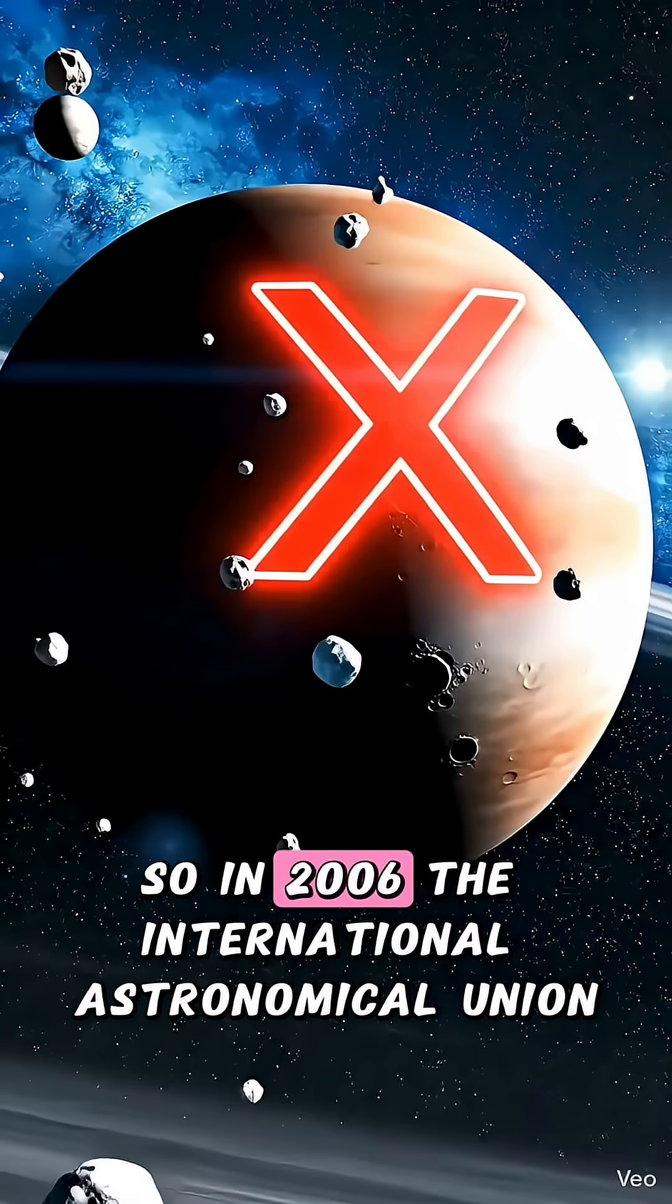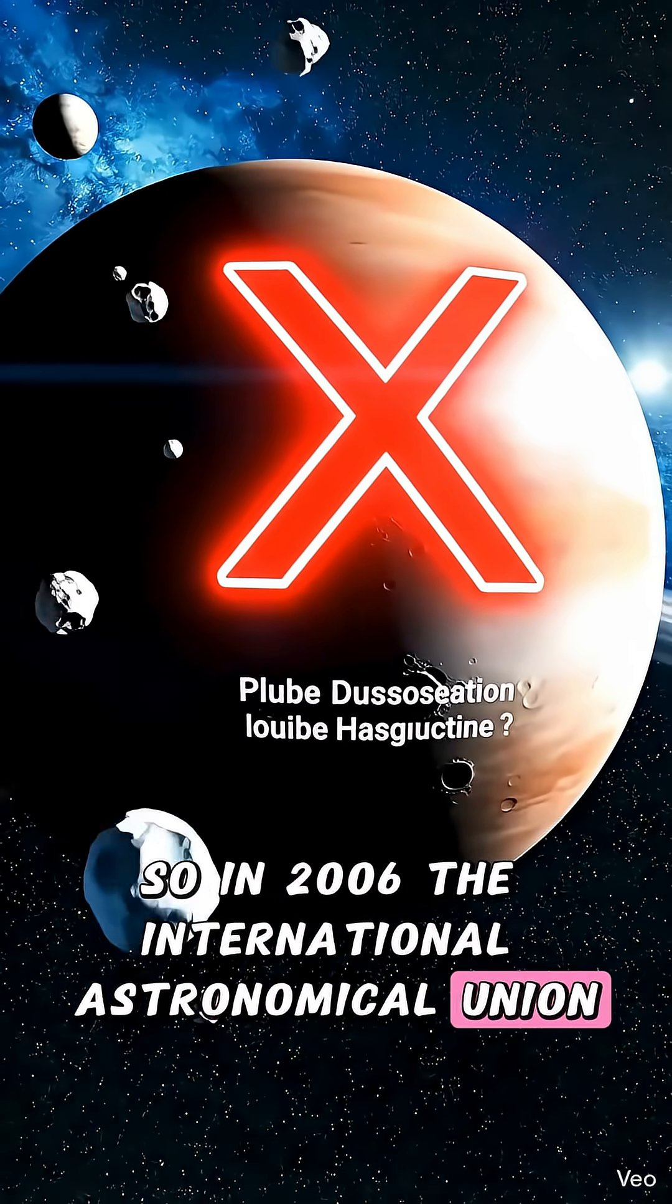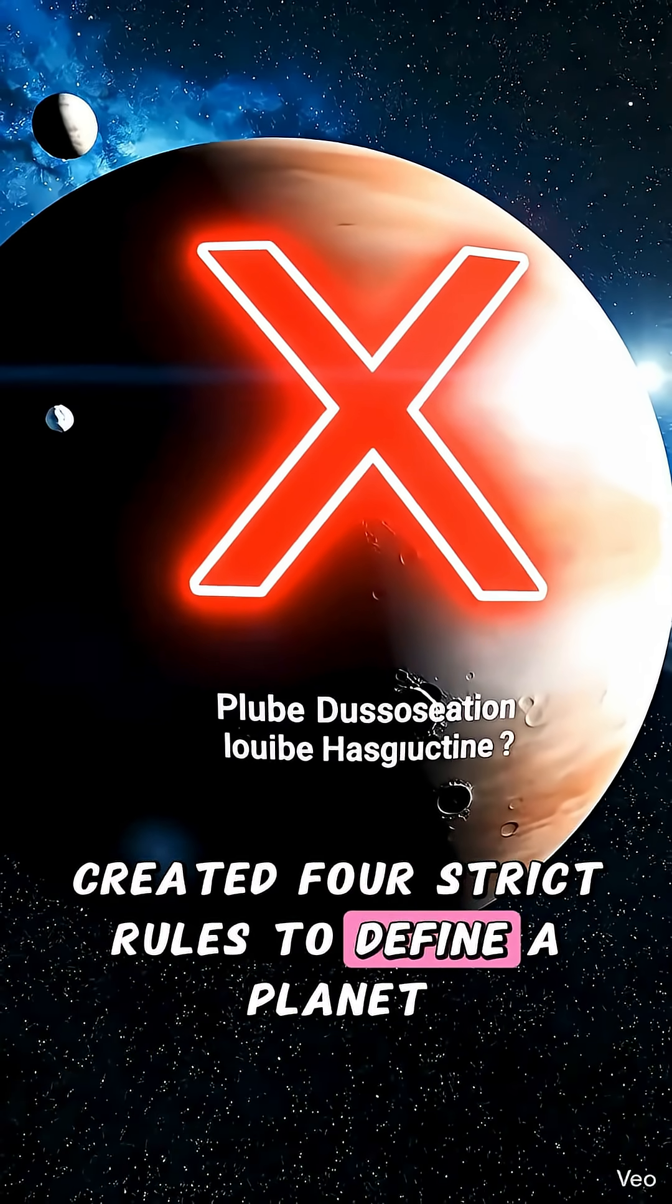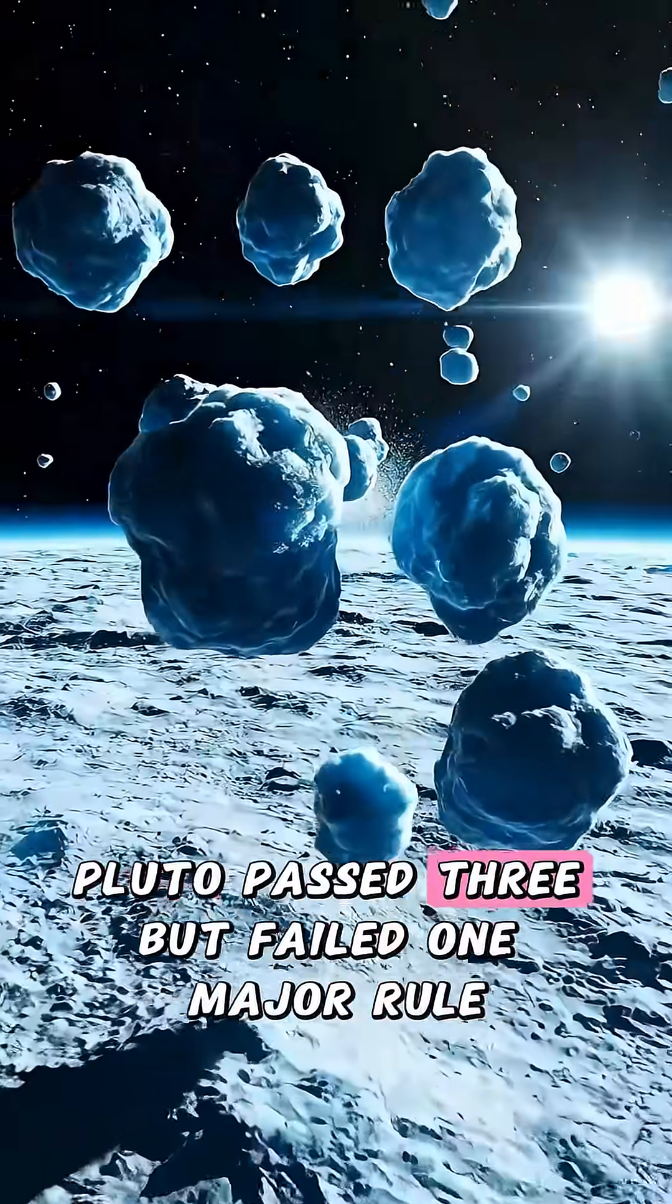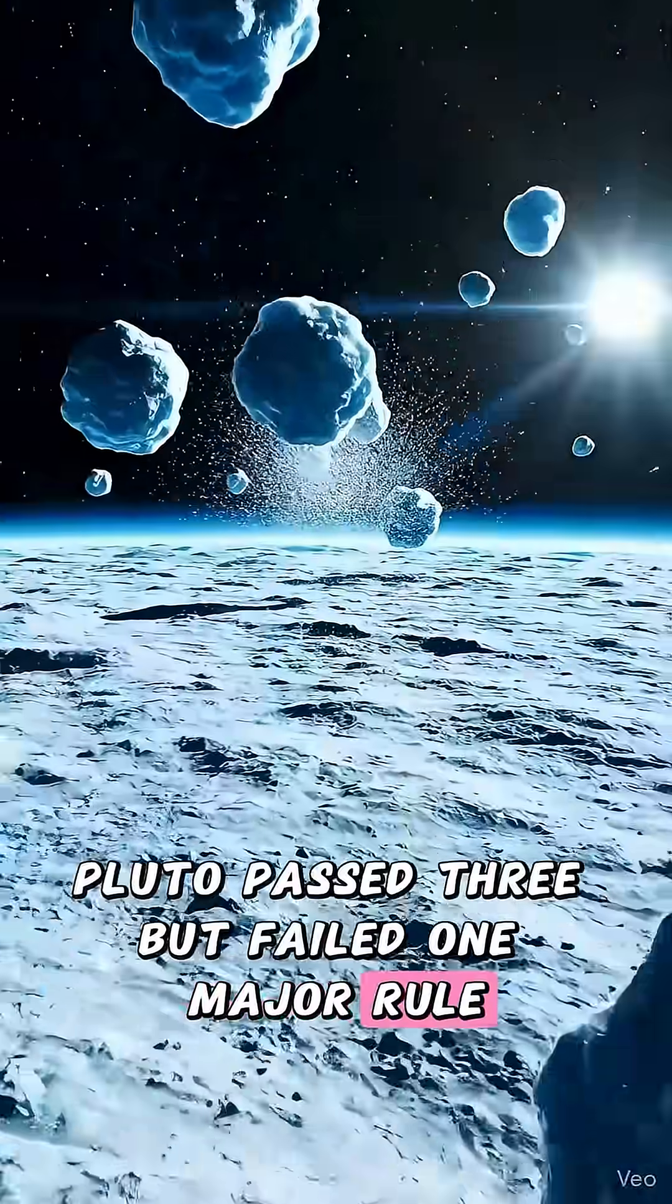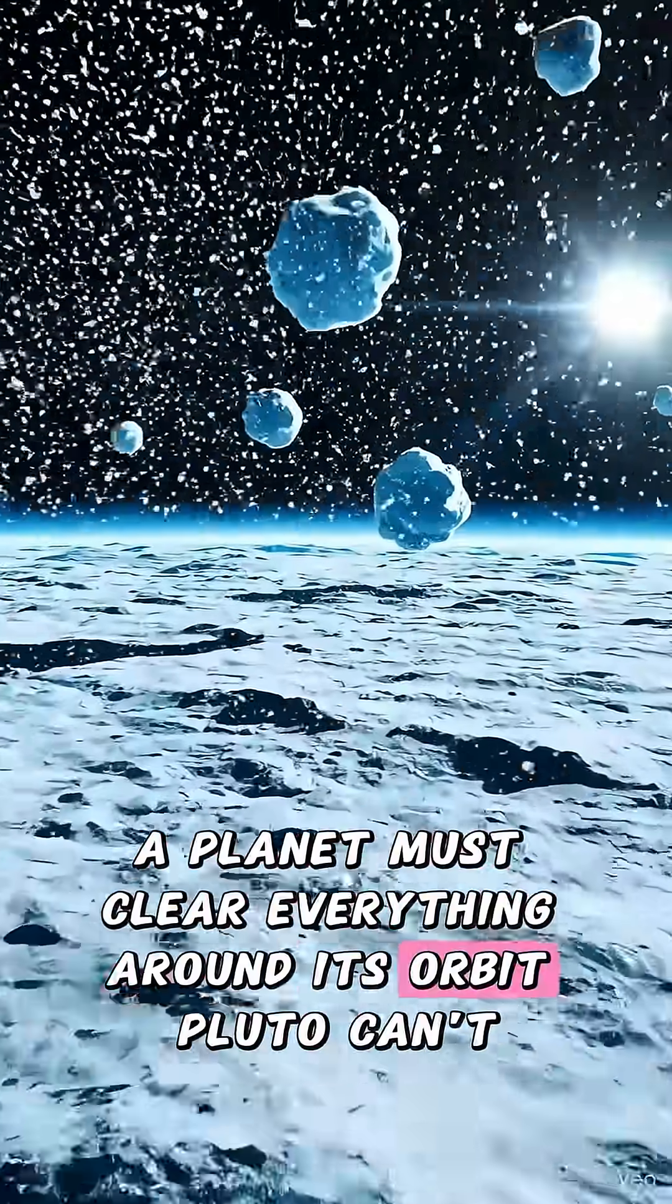So in 2006, the International Astronomical Union created four strict rules to define a planet. Pluto passed three, but failed one major rule. A planet must clear everything around its orbit.